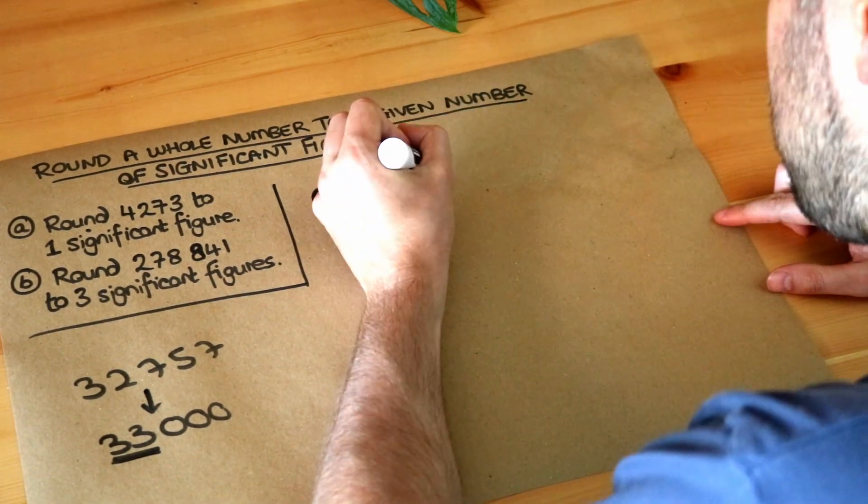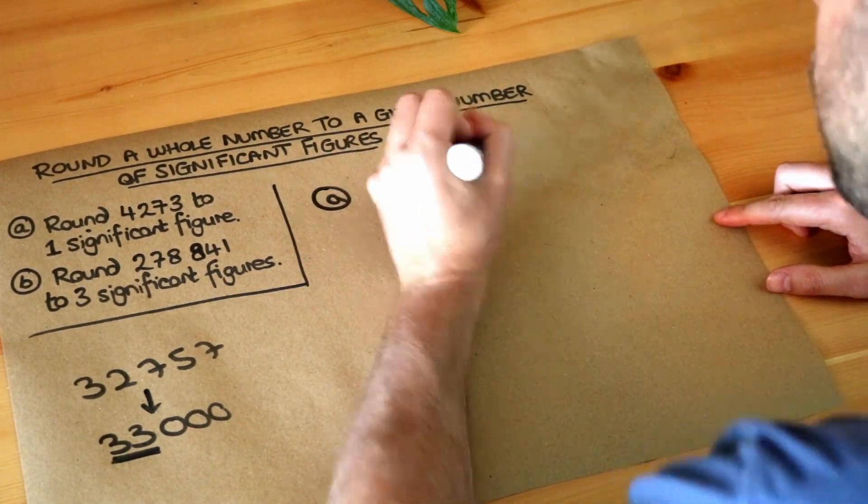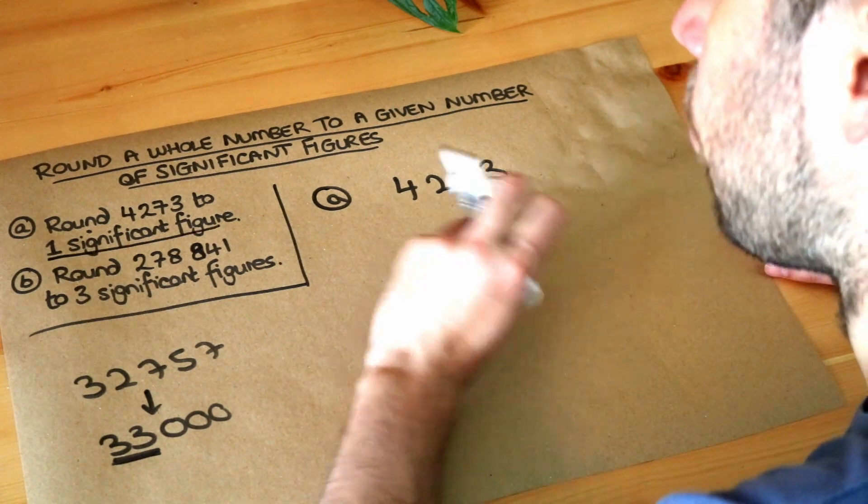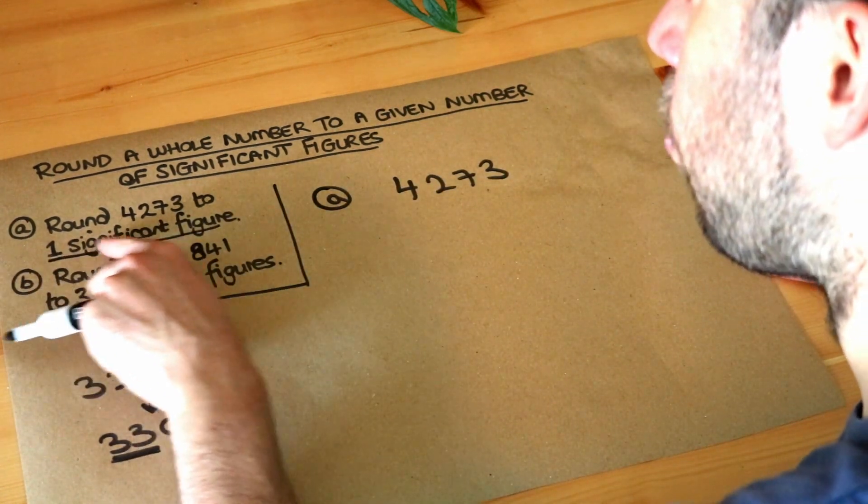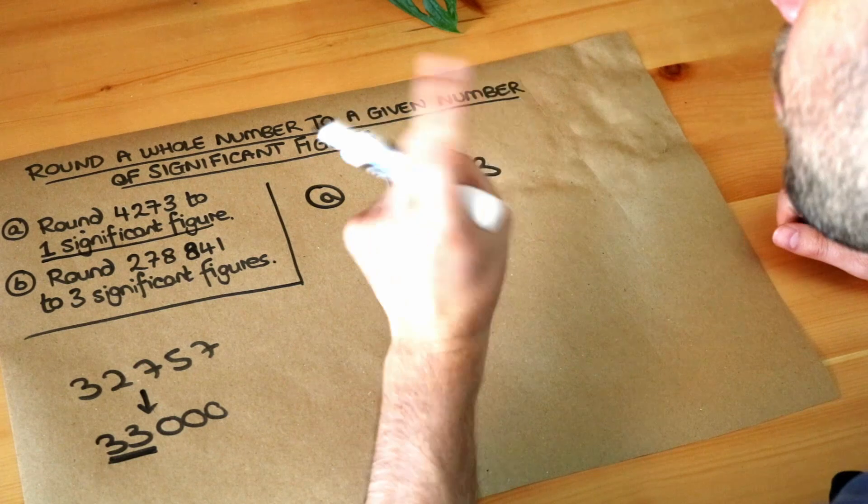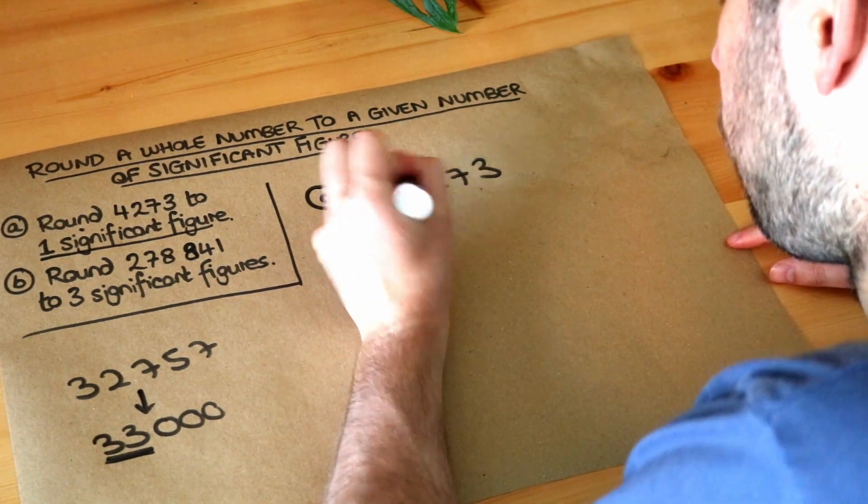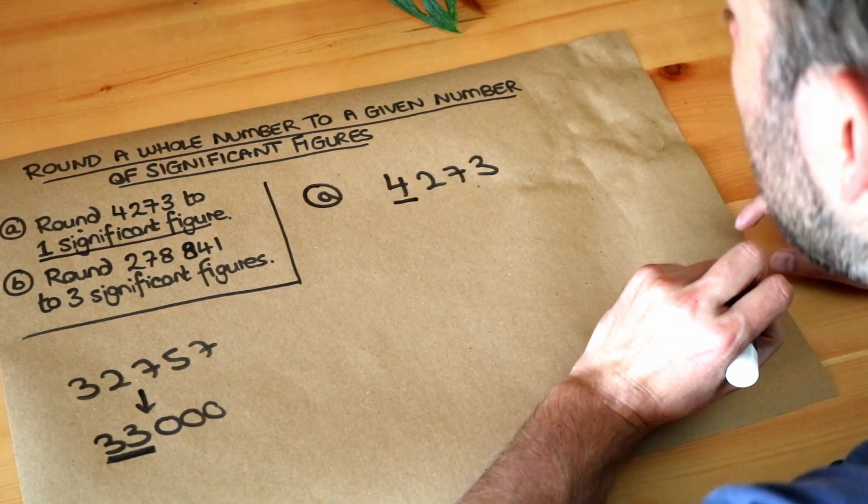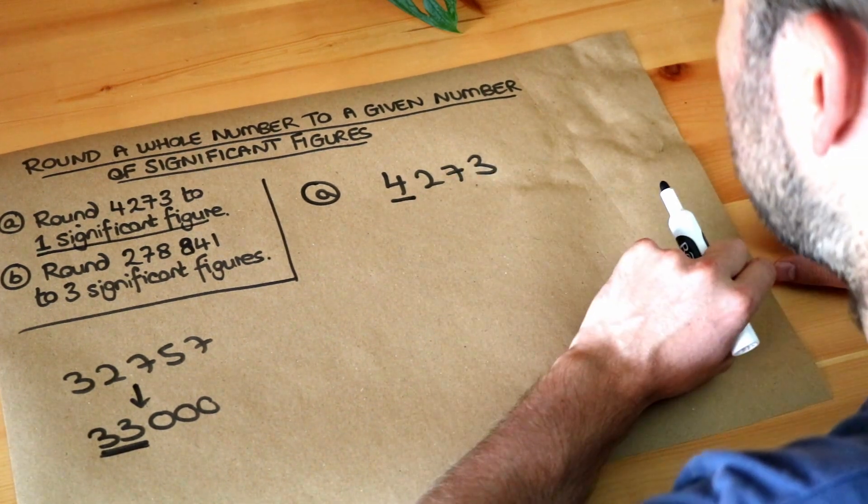We want to round 4,273 to one significant figure. So what we do is we say well if we want one significant figure we're just going to keep one digit at the start of the number. So we're going to keep one digit at the start of the number and all the other digits are going to be wiped out to zero.